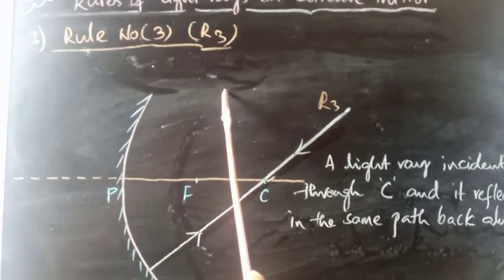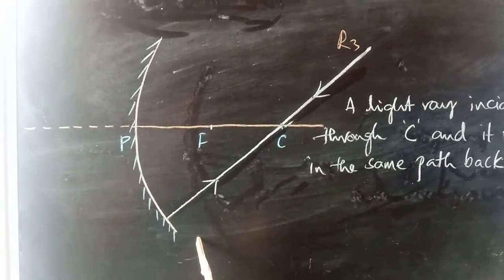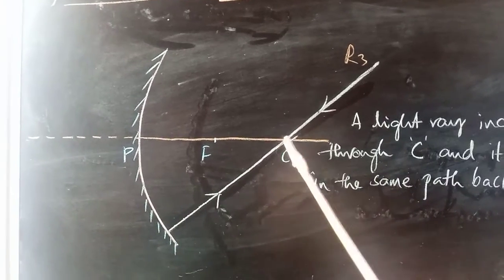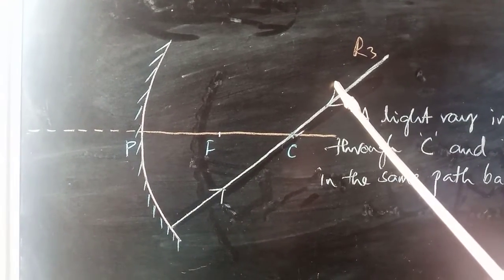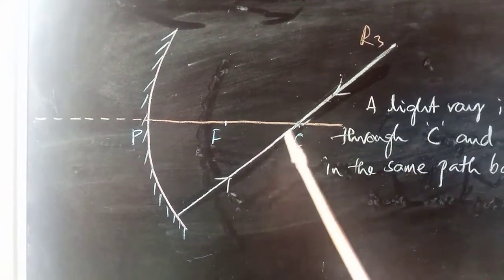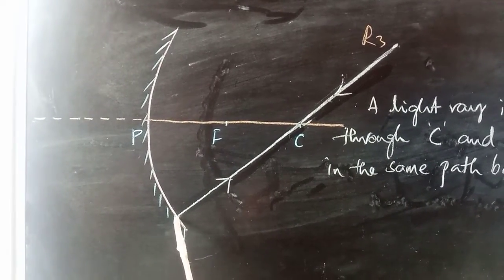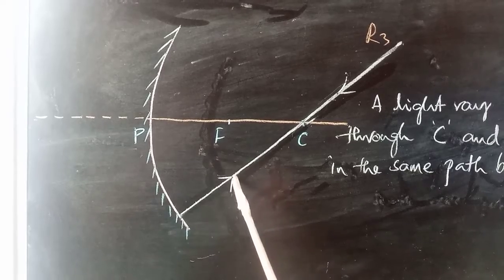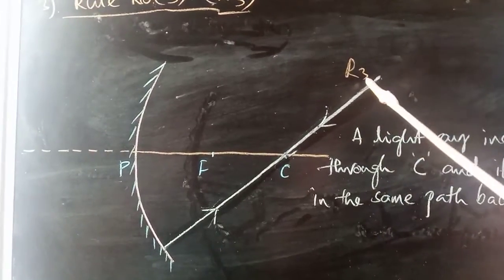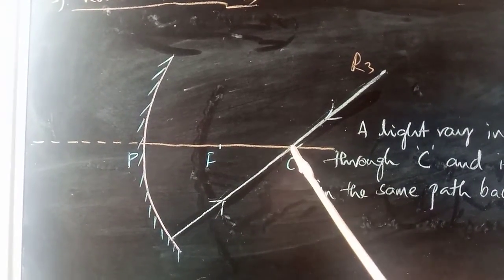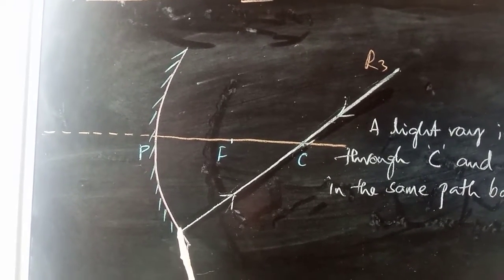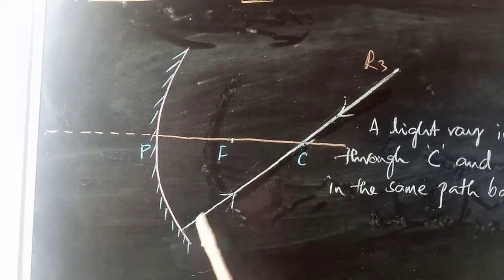Rule Number Three — R3. Here is the diagram of the concave mirror. An incident ray will meet the concave mirror through the center of curvature C. You see this arrow: the incident ray goes through C, meets the concave mirror, and then goes back in the same direction. When a light ray is incident through the center of curvature and meets a point on the concave mirror, it reflects back in the same path always.